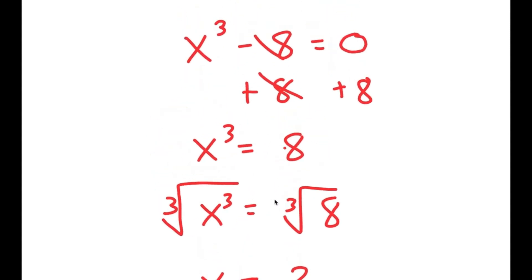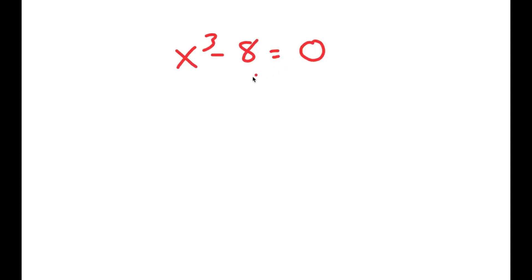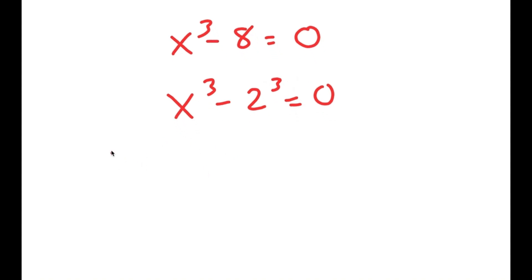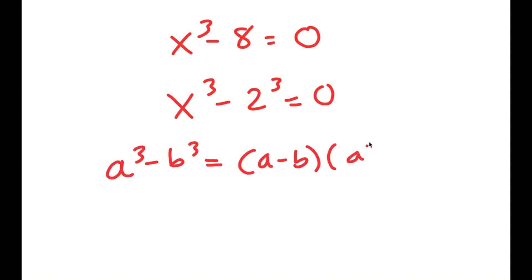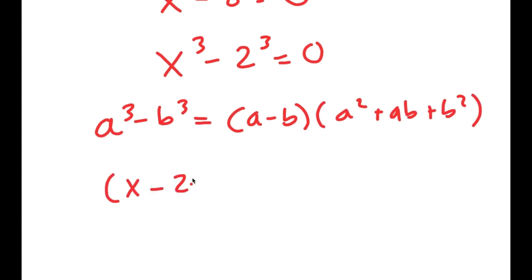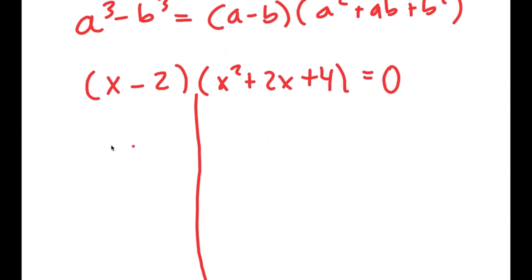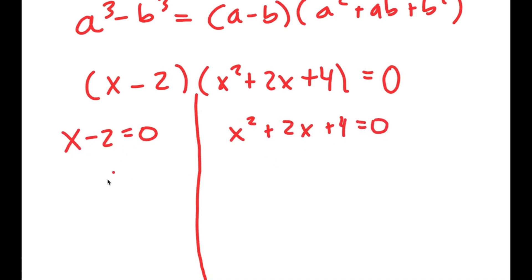But actually, there are more than one solution to this equation. I'm going to rewrite x to the power of 3 minus 8 equals 0 by rewriting 8 as 2 to the power of 3. So I get x cubed minus 2 cubed is equal to 0. Now I'll use the formula a cubed minus b cubed equals (a minus b)(a squared plus ab plus b squared). In this case, this turns into (x minus 2)(x squared plus 2x plus 4) equals 0. So I get two equations: x minus 2 equals 0, giving x equals 2, which was the solution we already found.